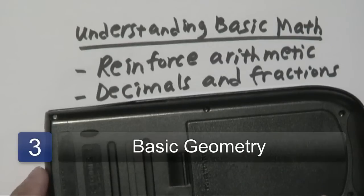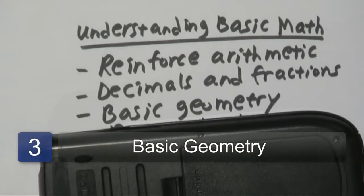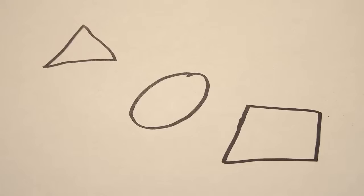Once you have the arithmetic and the decimals and fractions down, it's very important to understand basic geometry. Not necessarily to prove that one triangle is congruent to another, but it's important when it comes to everyday skills — things like finding the area of common shapes, the perimeter around a house, as well as circles and other common shapes that have geometric principles. Understanding the basic geometry ideas involving circles and triangles, et cetera, would be a good idea as well.